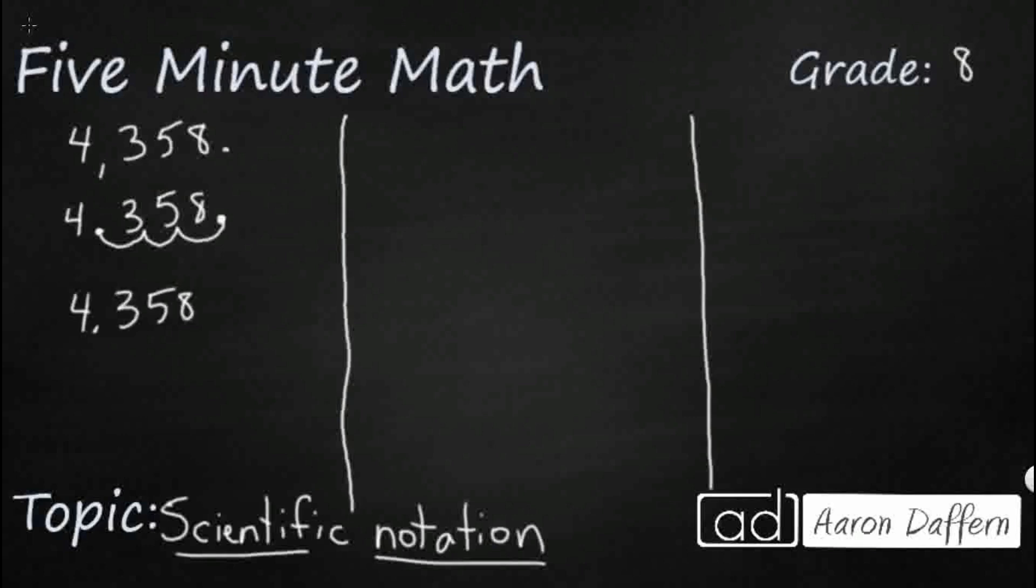4.358 times... every time you move a decimal over to the right you're multiplying it by 10, and I moved it over three times so 10 to the third. Now 10 to the third simply means 10 times itself three times.